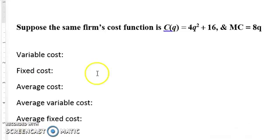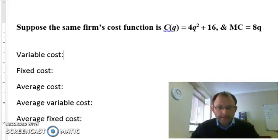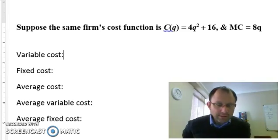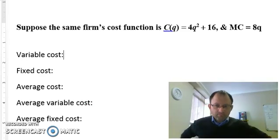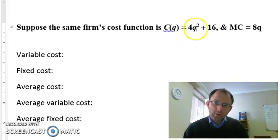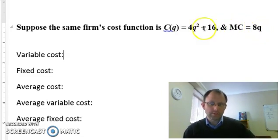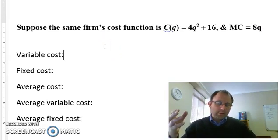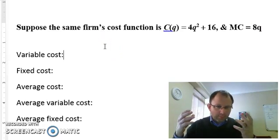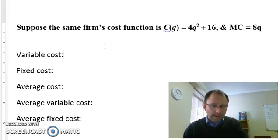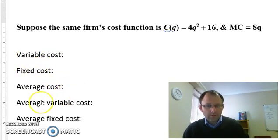Let's move on to the next example. We have a firm with a cost function: TC equals 4Q squared plus 16, and the marginal cost is 8Q. We want to get a couple of cost values: variable cost, fixed cost, average cost, average variable cost, and average fixed cost.